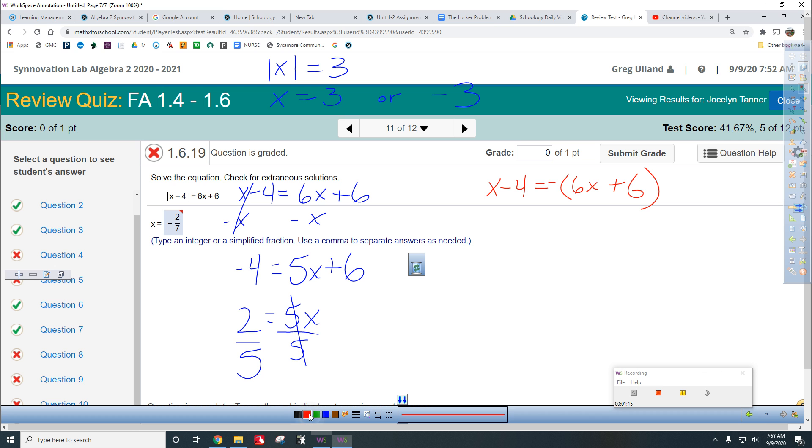So let's check the red one. Apply this negative sign like it's a distributive property. So x minus 4 is negative 6x minus 6. And now, again, let's add 6x to both sides. So you have 7x minus 4 is negative 6. Add 4 to both sides.